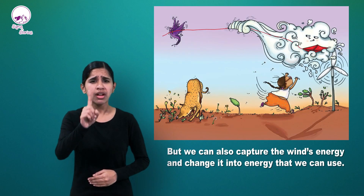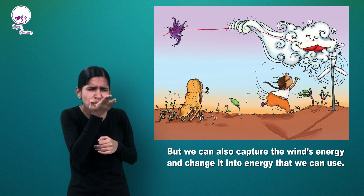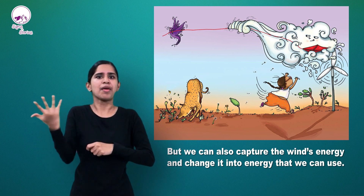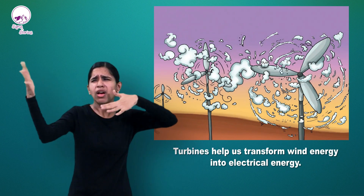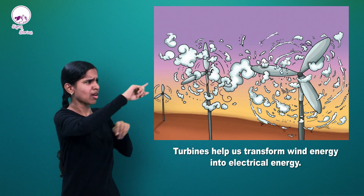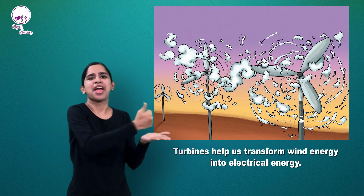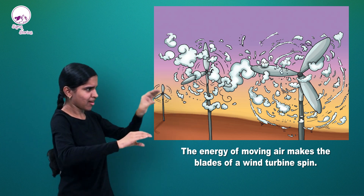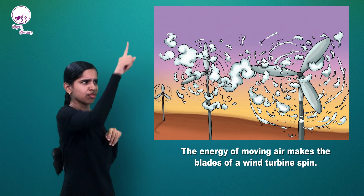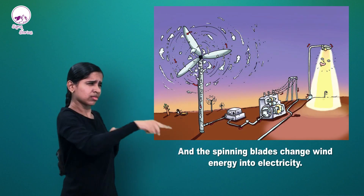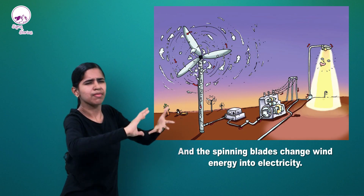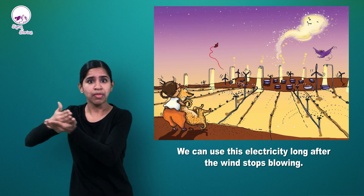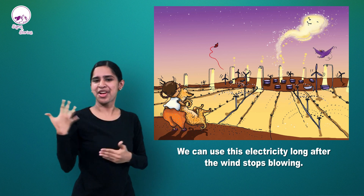But we can also capture the wind's energy and change it into energy that we can use. Turbines help us transform wind energy into electrical energy. The energy of moving air makes the blades of a wind turbine spin, and the spinning blades change wind energy into electricity. We can use this electricity long after the wind stops blowing.